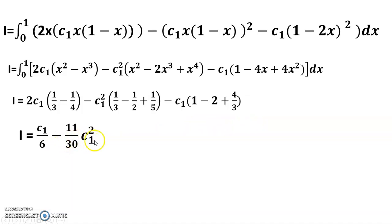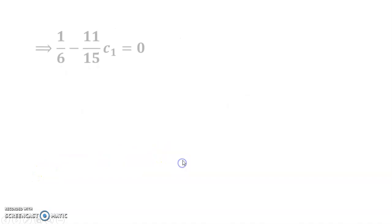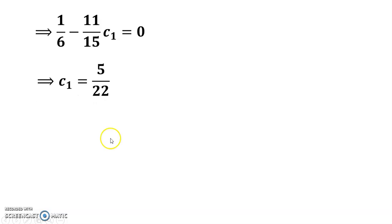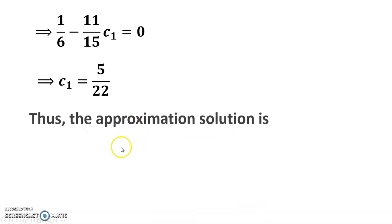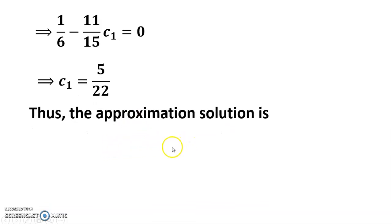dI by dc one is for extremum: one by six minus eleven by fifteen c one equals to zero, so c one is equal to five by twenty-two. Thus, the approximation solution is...